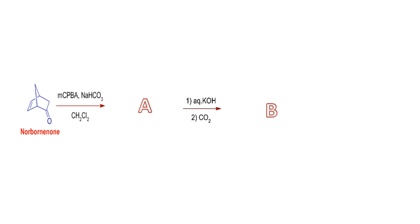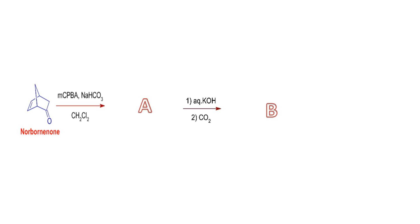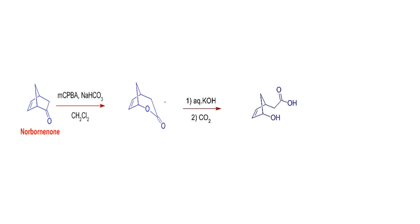Similarly, in the case of this norbornone, the reagent MCPBA will bring about the Baeyer-Villiger oxidation rearrangement. Among the bridgehead carbon and methylene carbon, the bridgehead carbon will preferentially migrate to oxygen to form a lactone on the bridgehead side. Under basic KOH conditions, this will hydrolyze to form an alcohol and acid, both attached to the cyclic ring.